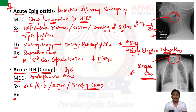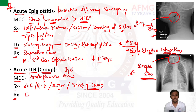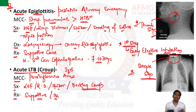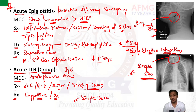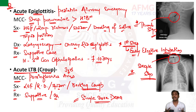For treatment of acute LTB: no antiviral drugs and antibiotics have no role since it is a viral infection. Supportive care is given — IV fluids and oxygen therapy if required. If the child has severe respiratory distress, a single dose of dexamethasone is given. If respiratory distress persists with hypoxemia, nebulized epinephrine can also be given.